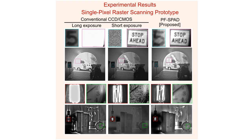Here are some experimental results. We captured these using a raster scanned single pixel SPAD hardware prototype. The first row shows a toy tunnel scene. The dynamic range of this scene is over a million to one. Notice that for a long exposure using the conventional camera, the region outside the tunnel appears saturated. With a short exposure time, the bright text becomes visible, but the dark speed limit sign in the tunnel appears noisy and unreadable. Our SPAD prototype can simultaneously capture the dark and bright pixels in a single exposure. The second row shows another extreme dynamic range scene. Our SPAD prototype can capture the bright bulb filament simultaneously with the dark text on the alarm clock and the dark shadow.